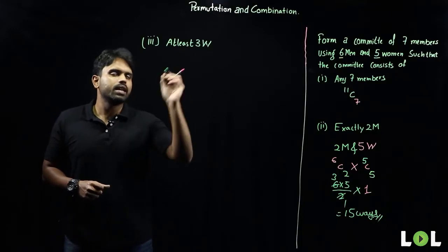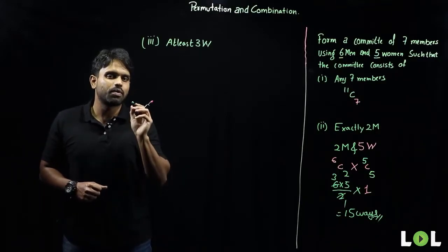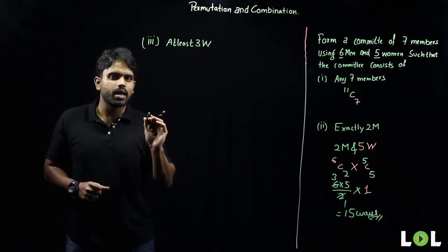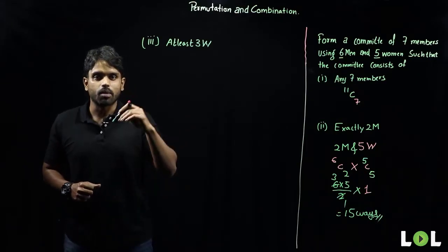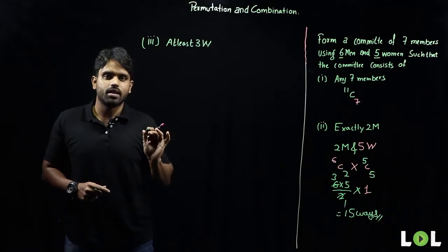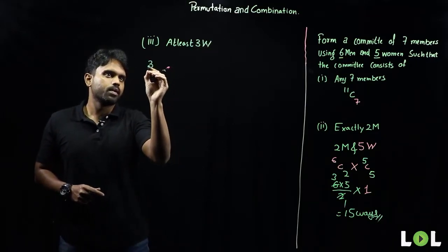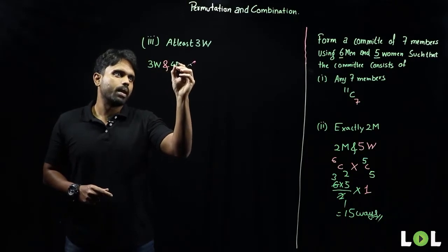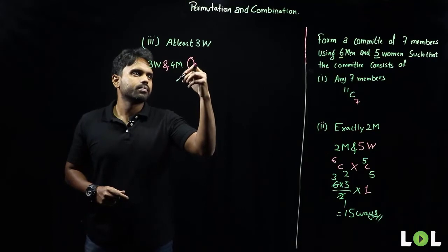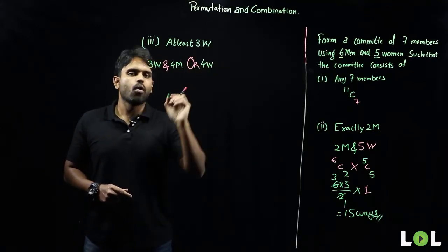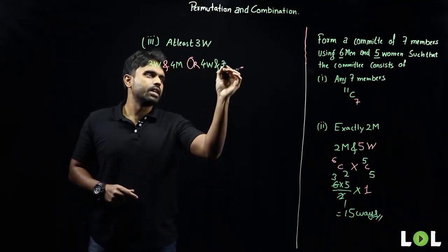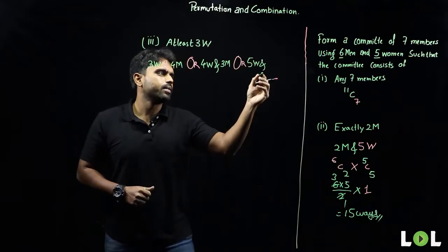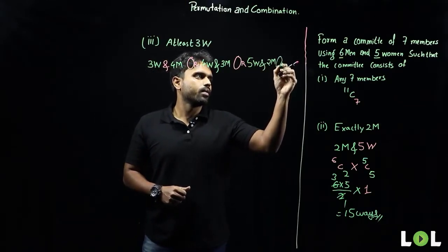Next question: at least three women. 'At least' means the number of women can be greater than or equal to three but not less than three. So the committee can have three women and four men, or four women and three men, or five women and two men, or six women.